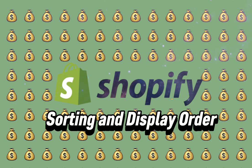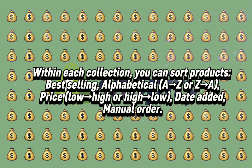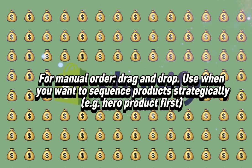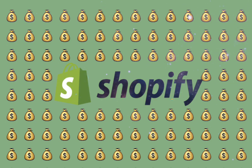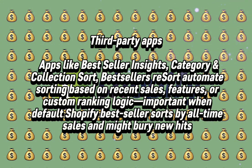Sorting and Display Order. Within each collection you can sort products by best-selling, alphabetical (A to Z or Z to A), price (low to high or high to low), date added, or manual order. For manual order, use drag and drop when you want to sequence products strategically — for example, hero product first. Third-party apps like Bestseller Insights, Category and Collection Sort, and Best Sellers Resort automate sorting based on recent sales, features, or custom ranking logic — important since default Shopify bestseller sorting uses all-time sales and might bury new hits.